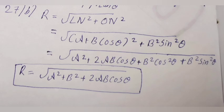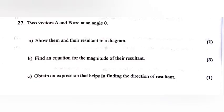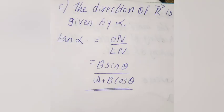Part c: Obtain an expression that helps in finding the direction of the resultant. Answer: The expression for the direction of the resultant is tan α = B·sinθ / (A + B·cosθ).